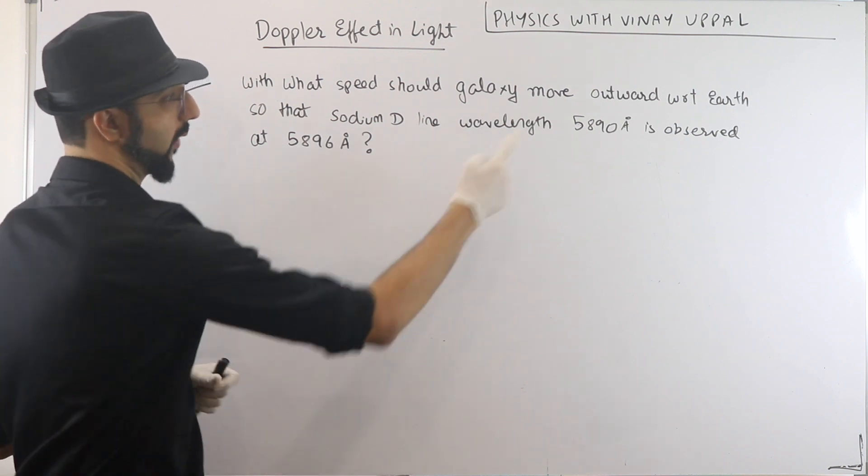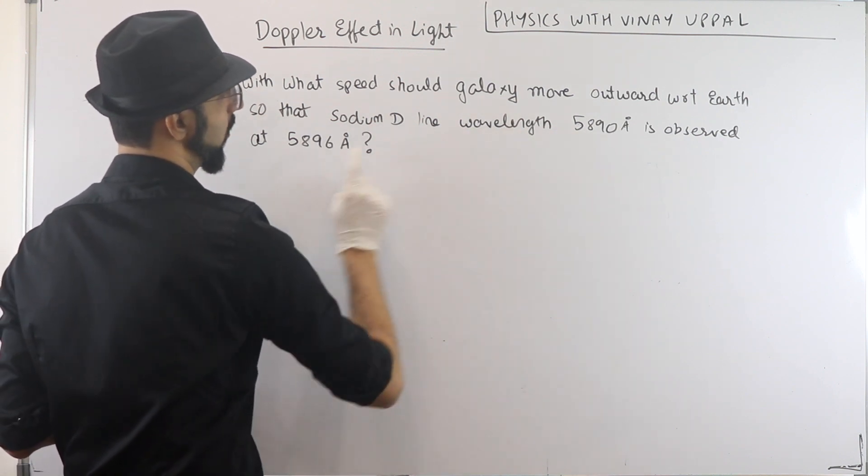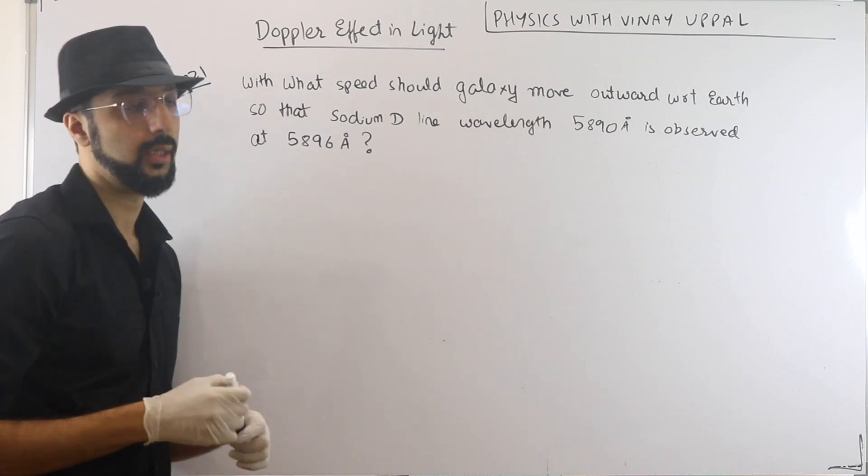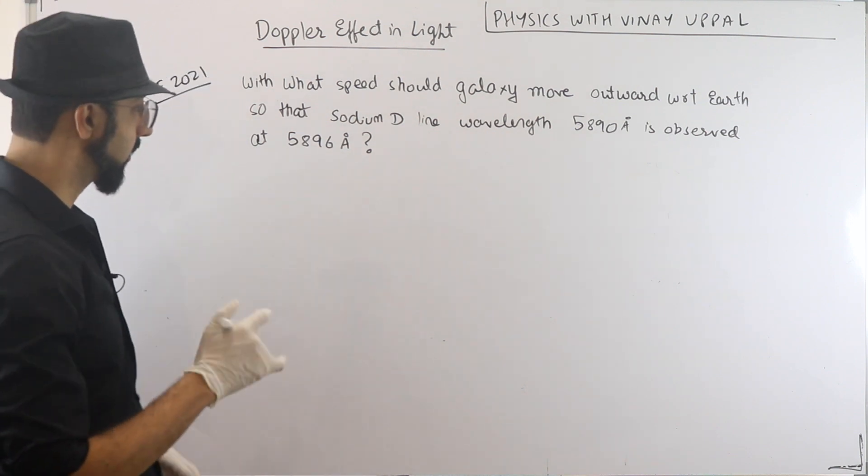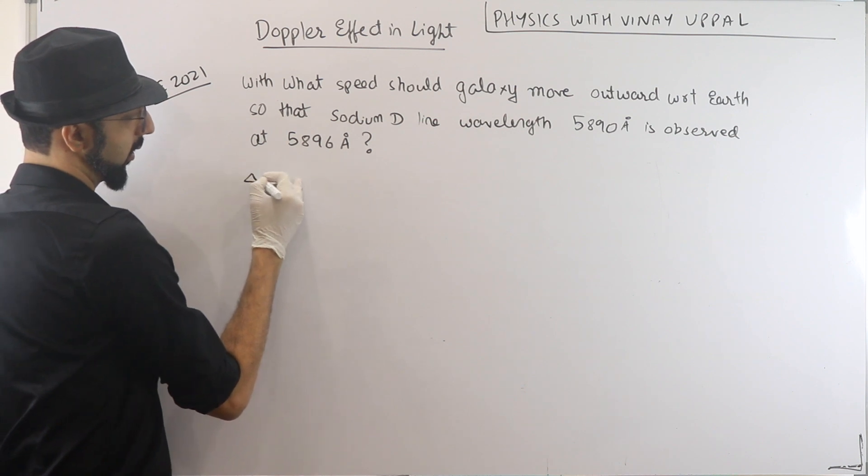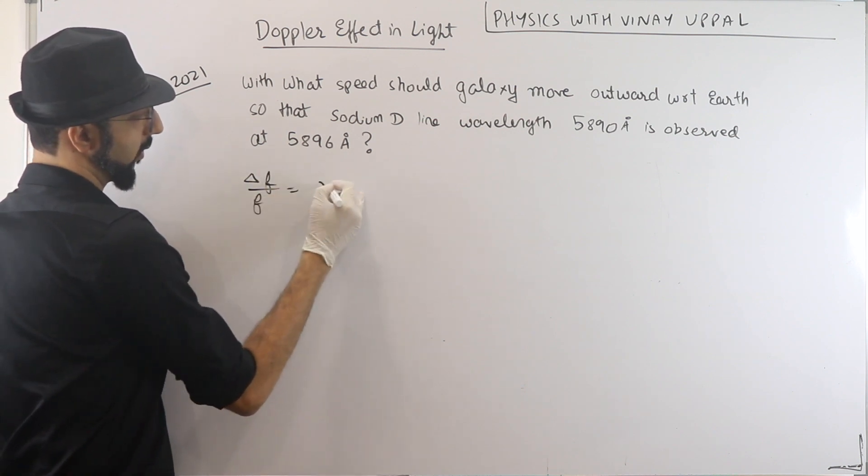So it's like a wavelength from a galaxy light. But we will observe it from Earth. It will be a different wavelength. So if the 5890 wavelength is coming from the galaxy, we will observe it at 5896. So here only thing is that wavelength is changing.